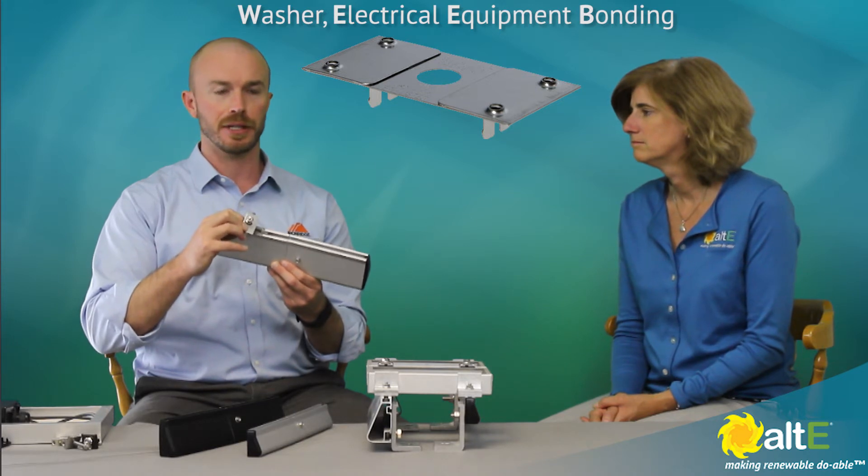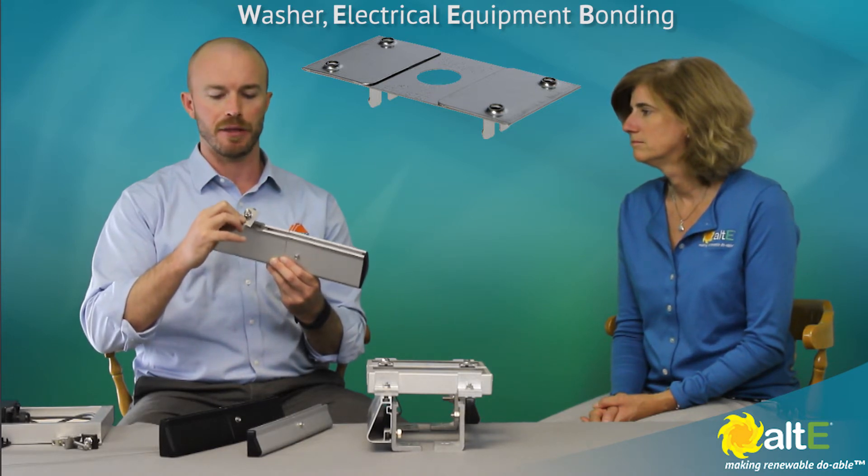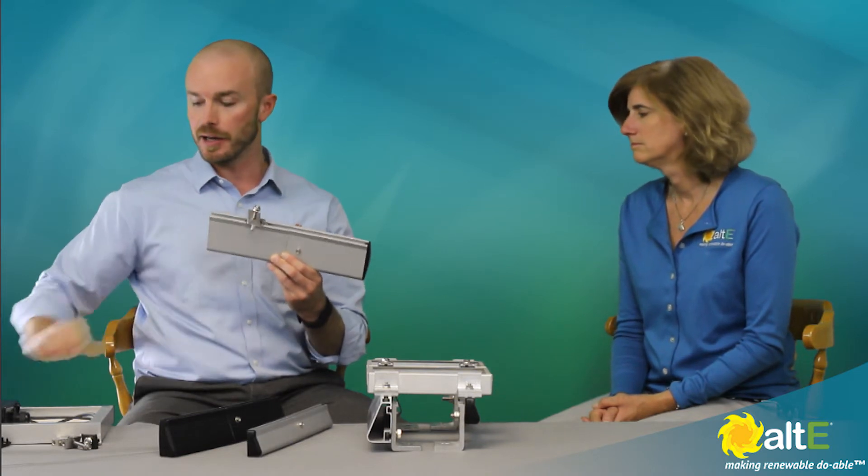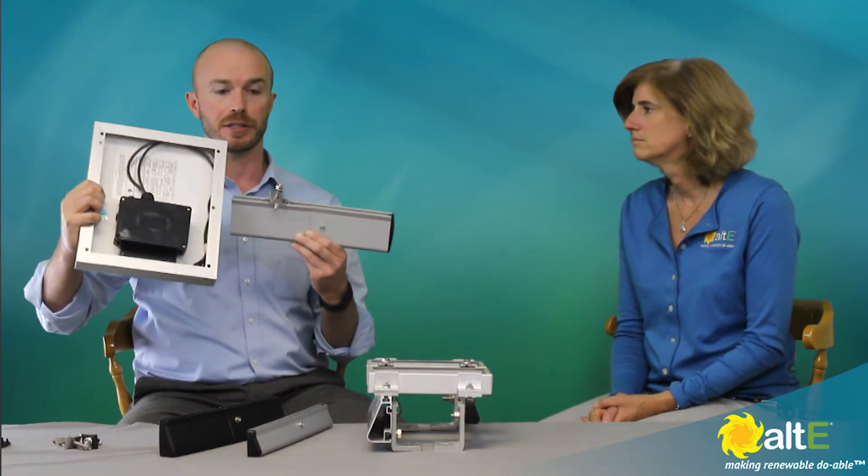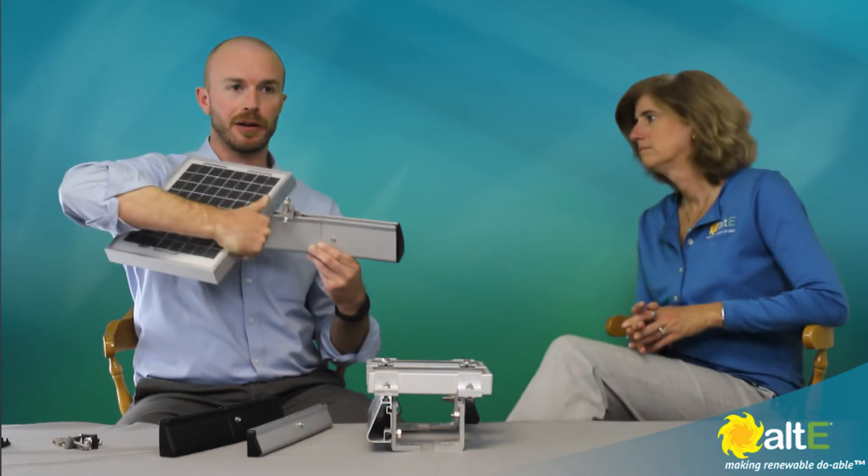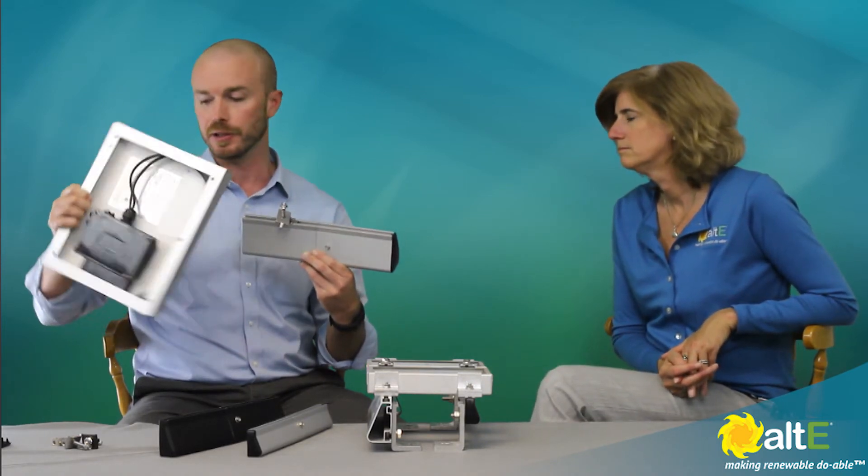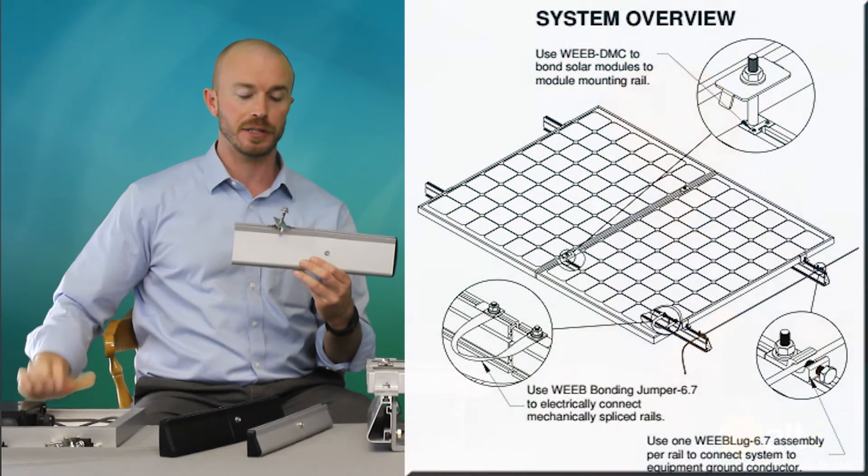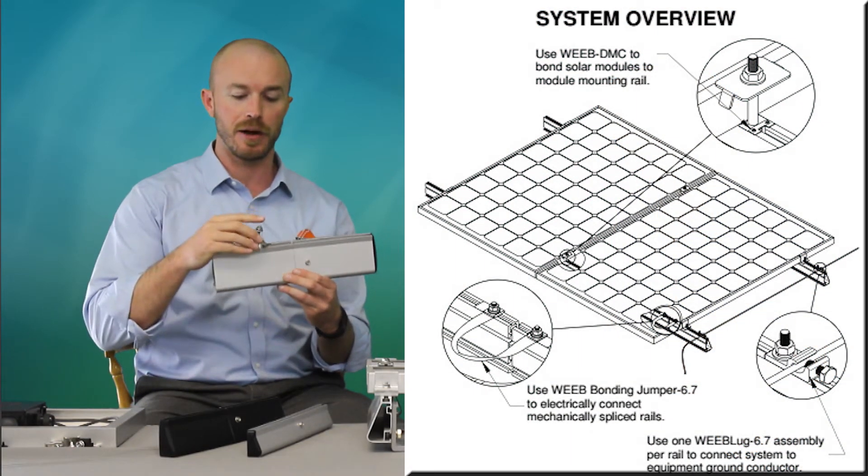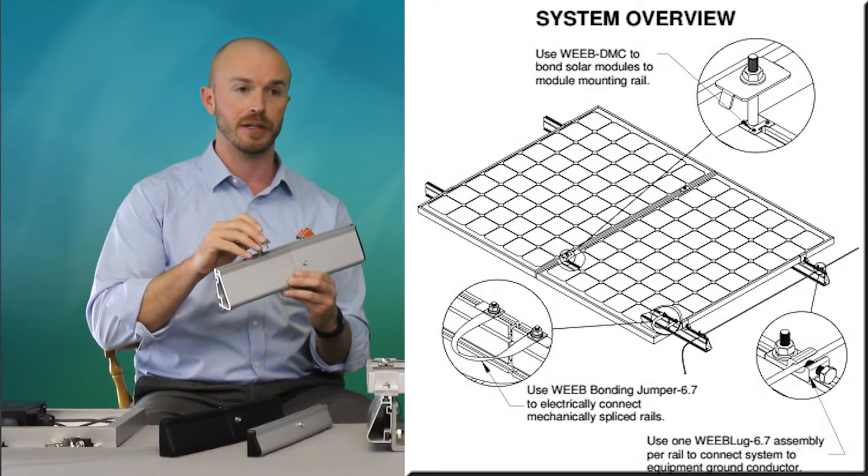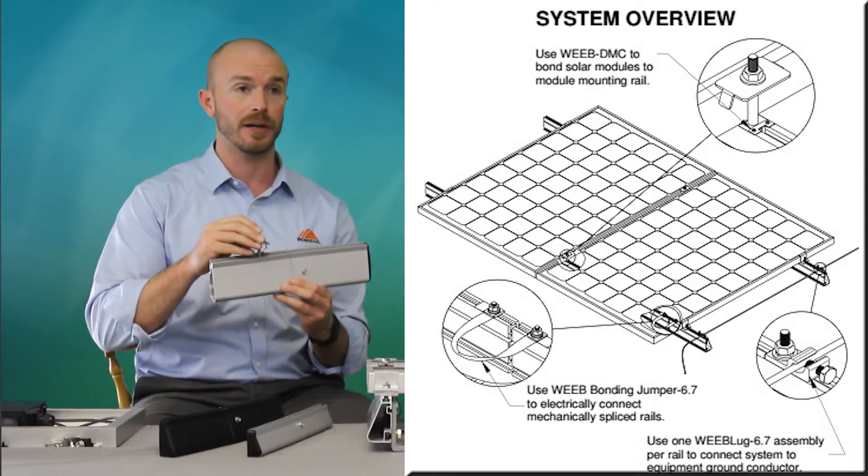This little washer acted sort of like a star washer. It would get through the aluminum anodization on both the rail and on the underside of the module so that when pressed together and clamped down, that would form an electrical bond between your module and your rail. Still a better option than using grounding lugs, but still it was an extra part on the roof and an extra part you had to buy and an extra part you had to inventory.